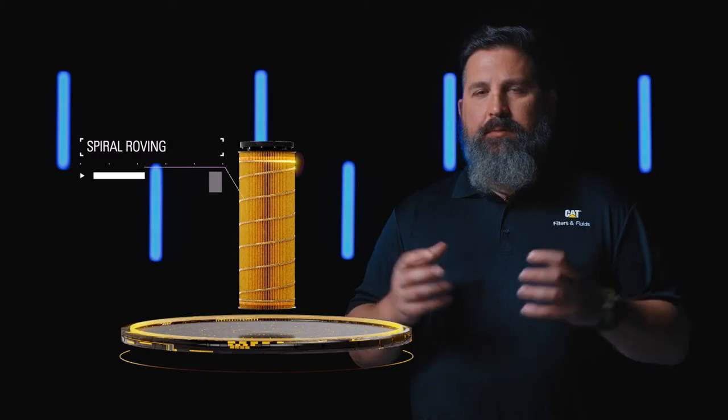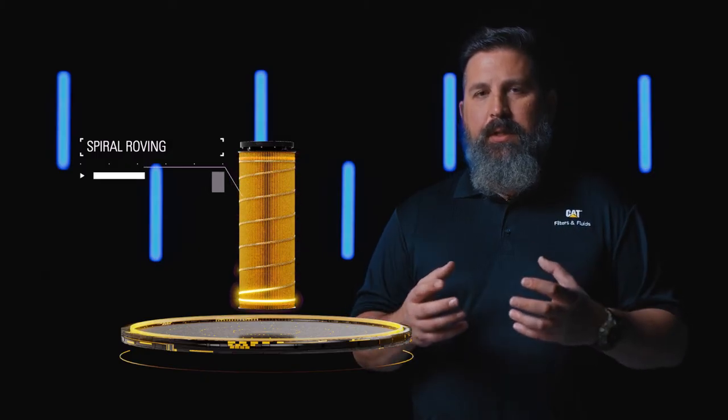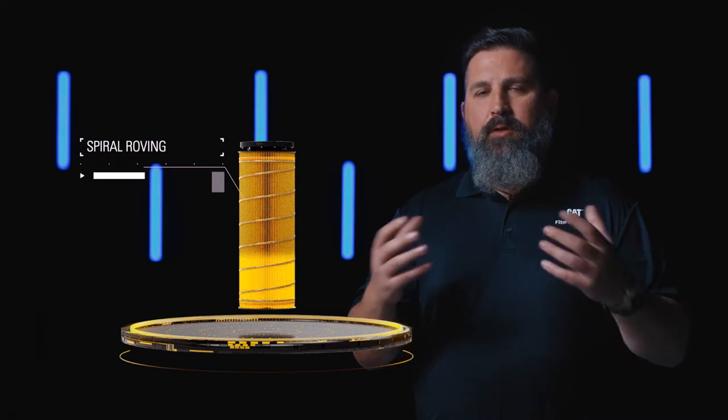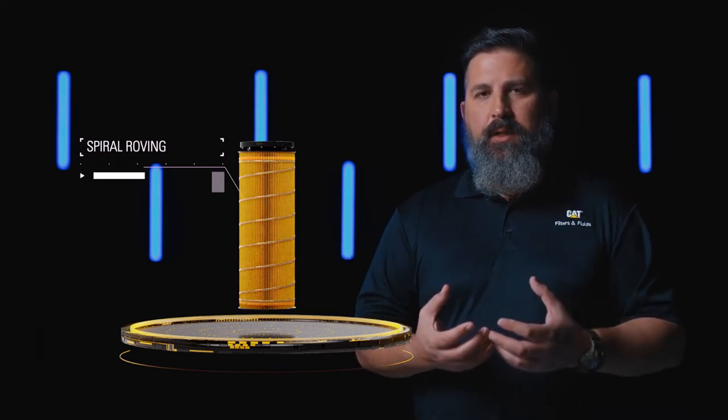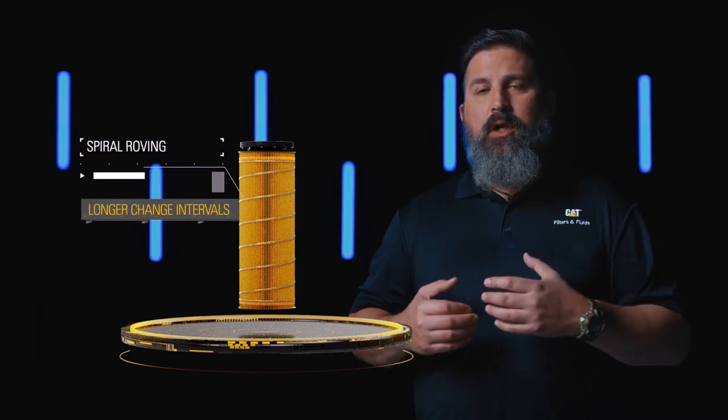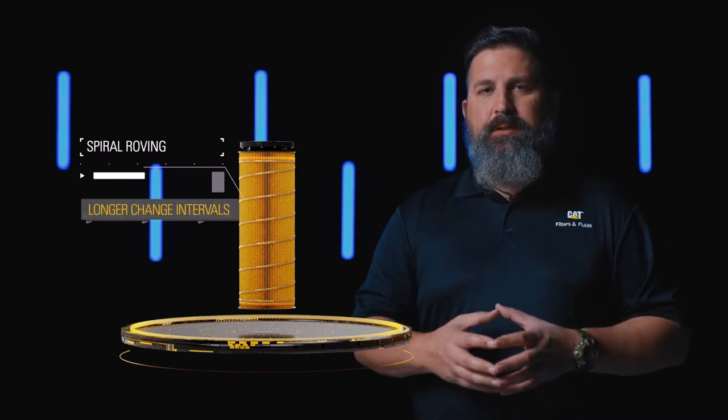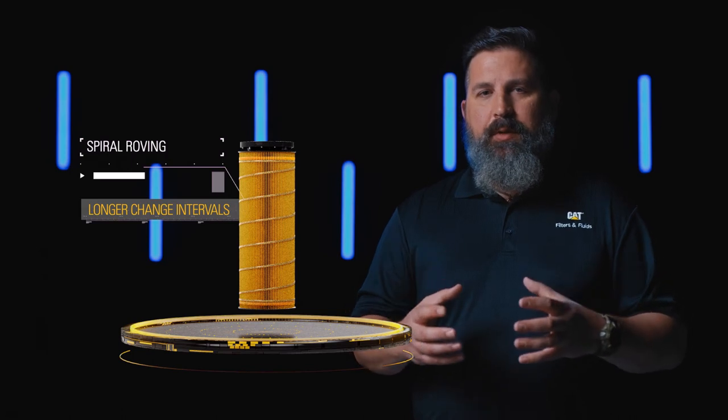Spiral roving helps keep those pleats in place. That means you get the full use out of that filter, the most contamination control that you can get. That's why a lot of times the Caterpillar filters are able to go longer change intervals because we're keeping those pleats separated.